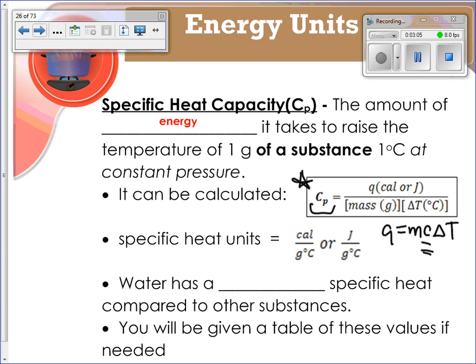The units for specific heat capacity are either calories over grams times degrees Celsius, or joules over grams times degrees Celsius. A trick with that: when you look at those units, that dictates the units for all your other variables in that equation. For example, if you're using this as the unit you've been given for your specific heat capacity, if you calculate Q, it's going to be in calories. Water has a very high specific heat capacity compared to other substances, and you'll be given a table of these values if and when needed.